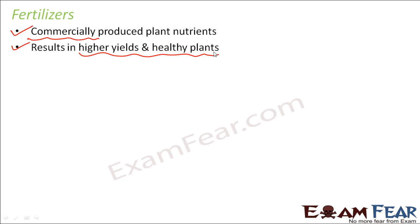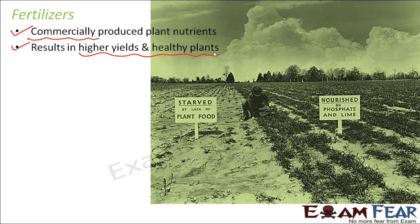Nutrient-wise, fertilizers are a better source than manure, but there are quite a few disadvantages also associated with fertilizers. Here in this picture, you can look at two sections of the field — section 1 and section 2. Section 1 is all barren with no greenery at all, whereas section 2 has a lot of green plants. The first half is starved by lack of plant food — no fertilizer has been applied — whereas section 2 is nourished on phosphate and lime. When you apply fertilizers, they directly provide plant nutrients to the soil, so the productivity is better, plants grow in a better way, and we get higher yields.